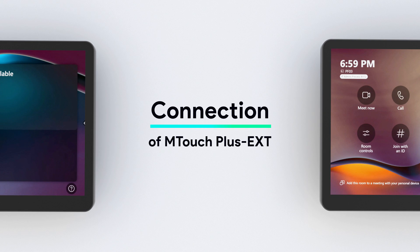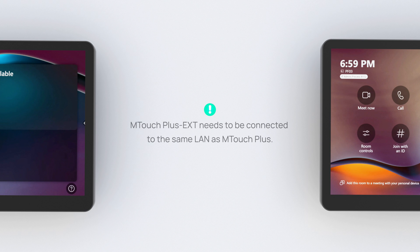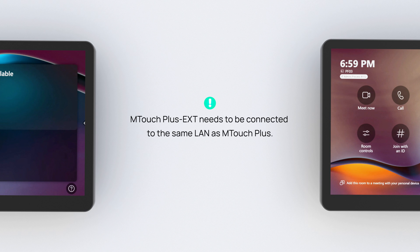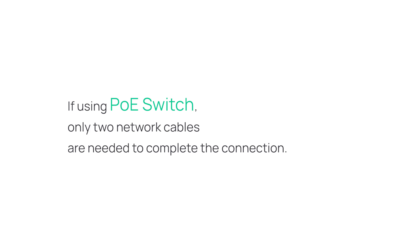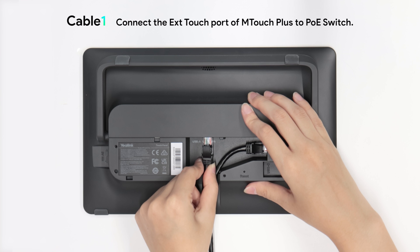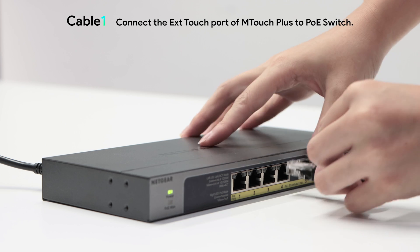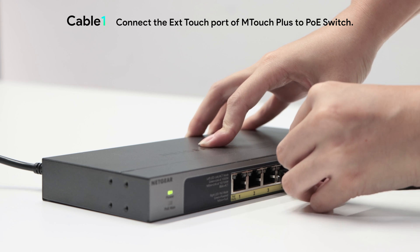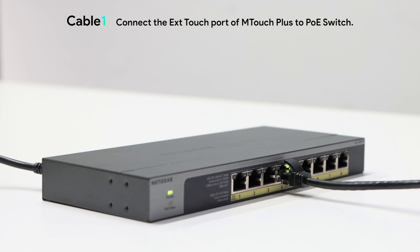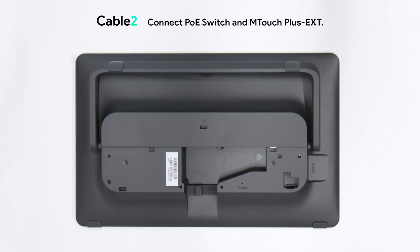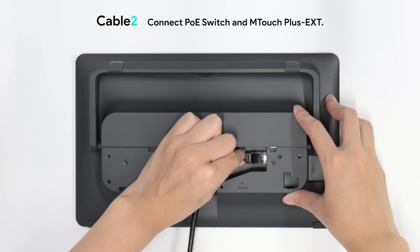Connection of M-Touch Plus EXT: M-Touch Plus EXT needs to be connected to the same LAN as M-Touch Plus. If using a PoE switch, only two network cables are needed to complete the connection. Cable 1: Connect the EXT touch port of M-Touch Plus to the PoE switch. Cable 2: Connect the PoE switch and M-Touch Plus EXT.